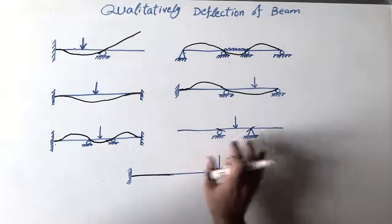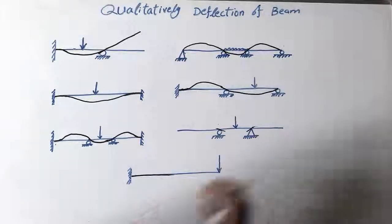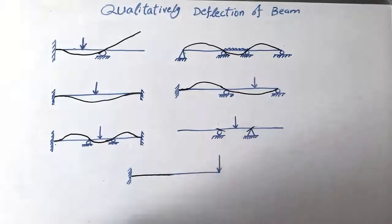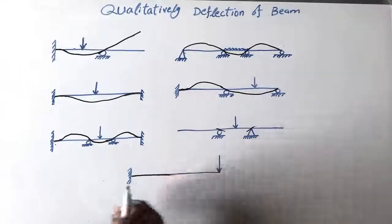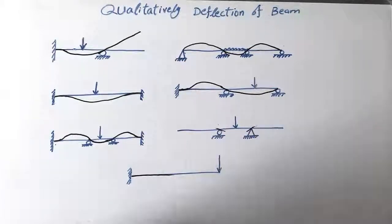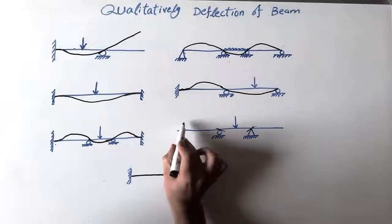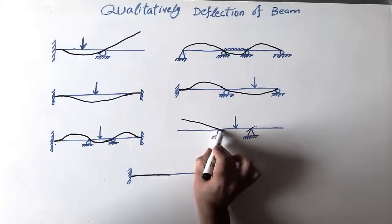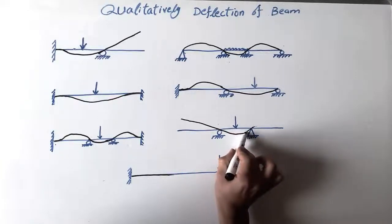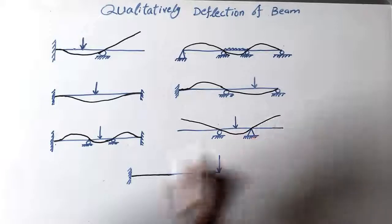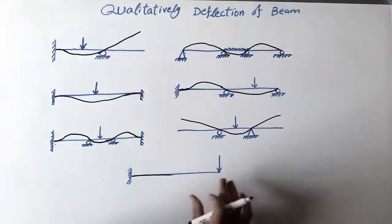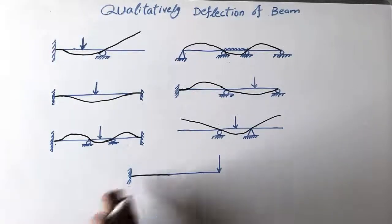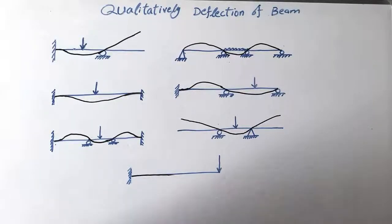Now we have this type of beam with two supports in the middle — one roller and one pin — and both ends are overhanging. This is an overhanging beam from both sides with a point load acting in the middle between the supports. The deflection shape would look like this.